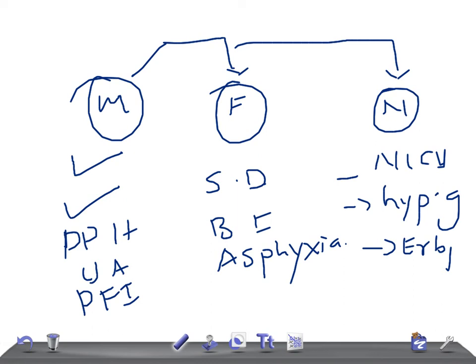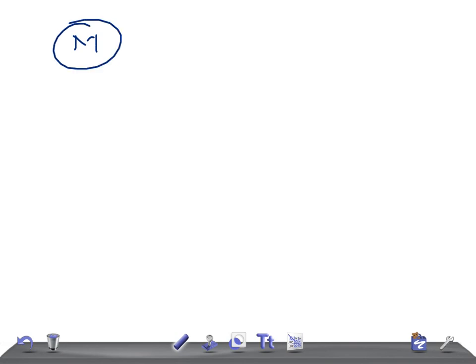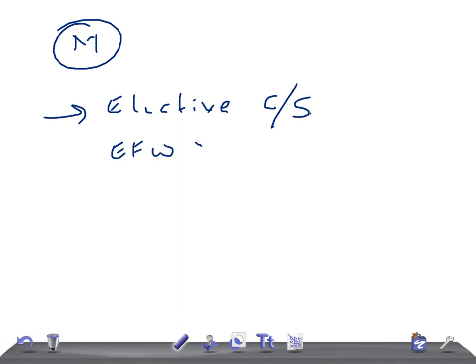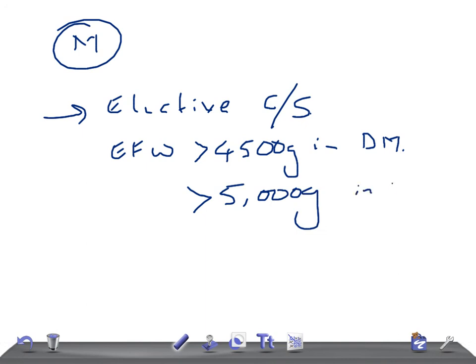As for prevention, there is no accurate way of predicting or preventing macrosomia currently available. Regarding management, consider elective cesarean section — rather than emergency cesarean — if the estimated fetal weight is more than 4,500 grams in a diabetic mother, or more than 5,000 grams in a non-diabetic mother.